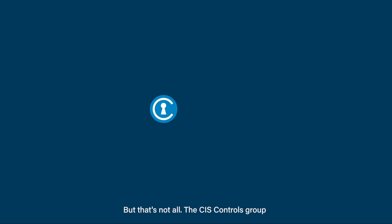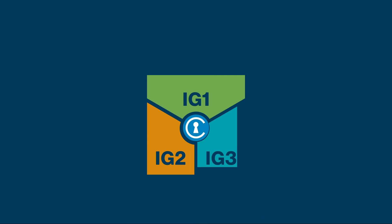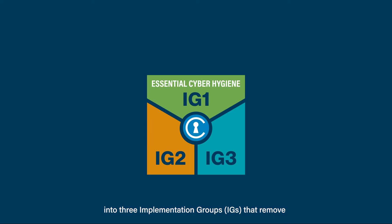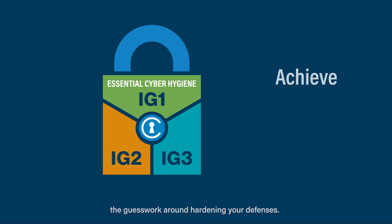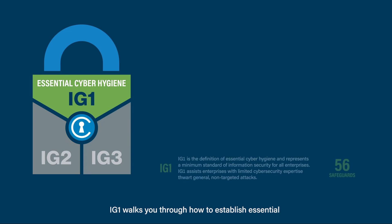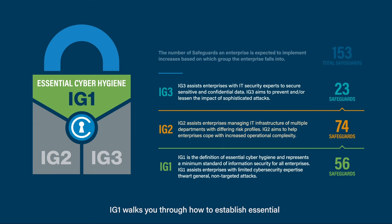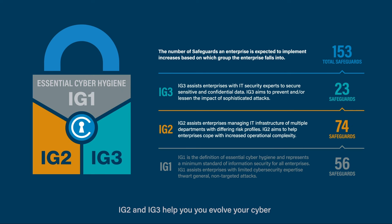The CIS Controls group into three implementation groups, or IGs, that remove the guesswork around hardening your defenses. IG1 walks you through how to establish essential cyber hygiene as a foundation. IG2 and IG3 help you evolve your cyber maturity even further.